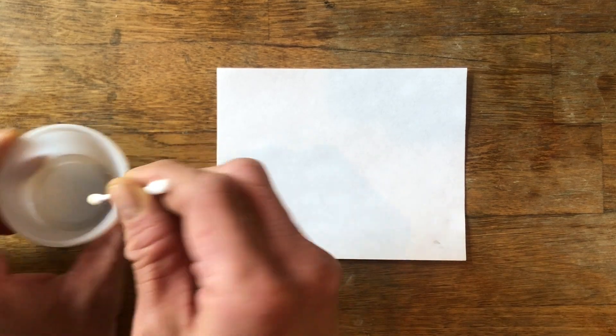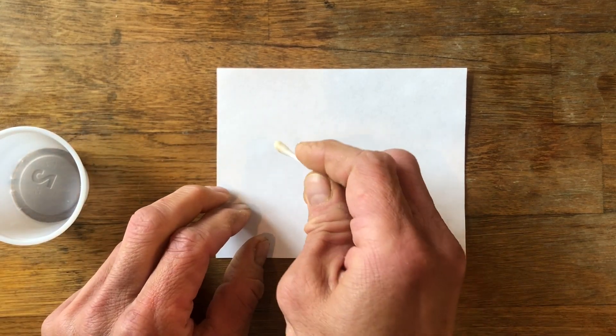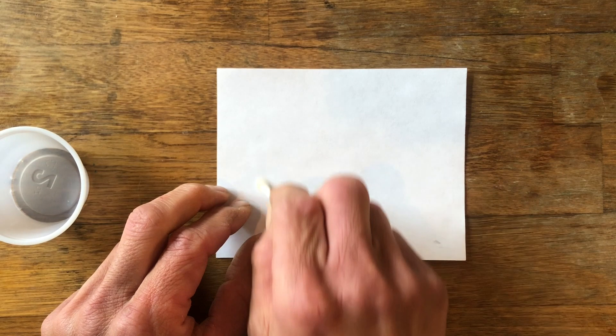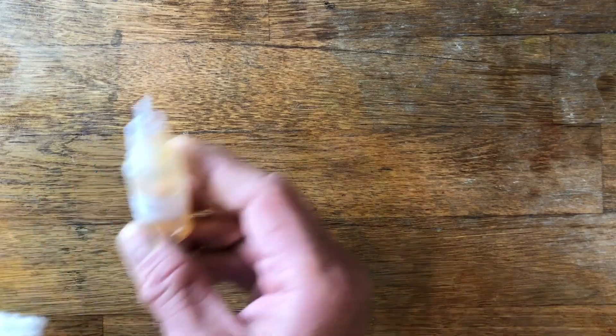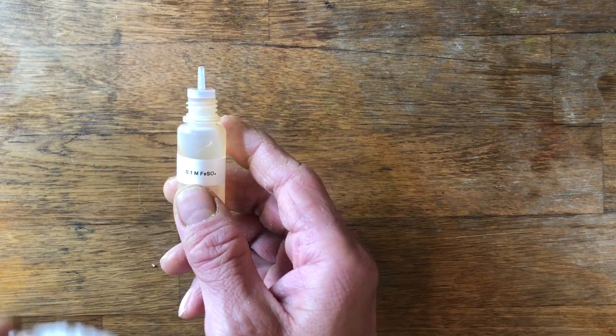Ours are from gall nuts, which is a swelling on oak tree buds resulting from gall wasp larvae. You can also use tea tannins from steeping green tea or black tea. Uncover the message with 0.1 molar iron sulfate solution.